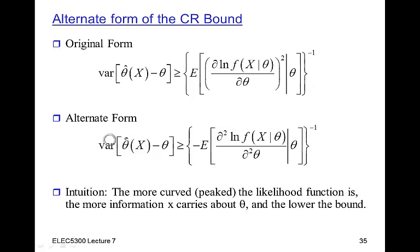This alternative form is equivalent, so this term here is exactly equal to this term here. The difference is that instead of having the derivative of the log likelihood squared, we have the second derivative of the log likelihood. The intuition here is that this will typically be a measure of how peaked the likelihood function is around the true value of theta.